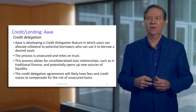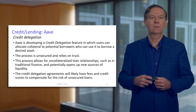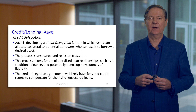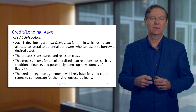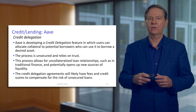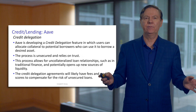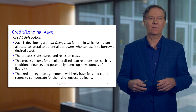There is another idea in Aave, and this has to do with credit delegation. The idea here is that users can allocate collateral to potential borrowers who could use it to borrow an asset. So far, everything we've done involves you actually providing the collateral yourself.